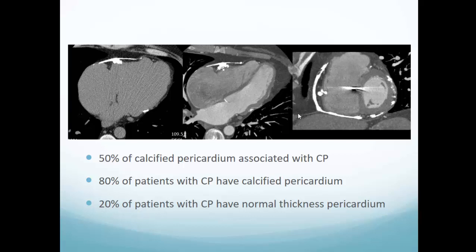In the literature: 50% of calcified pericardium is associated with constrictive pericarditis, and in patients with constrictive pericarditis, 80% have calcified pericardium. Clinically, the figure may be lower. The key thing to remember is that if you've got calcified pericardium, suspect constrictive pericarditis and correlate with clinical history. But importantly, 20% of patients with constrictive pericarditis have a normal thickness, non-calcified pericardium.